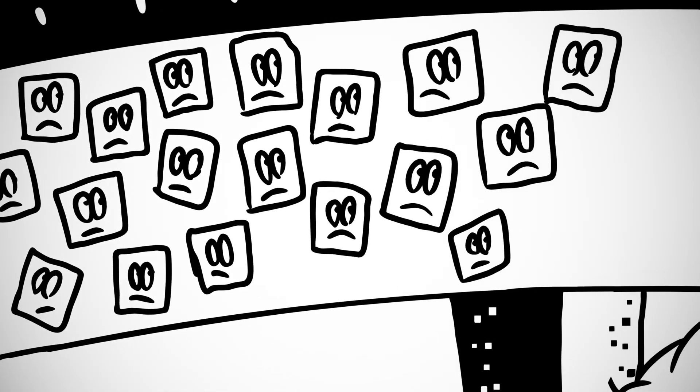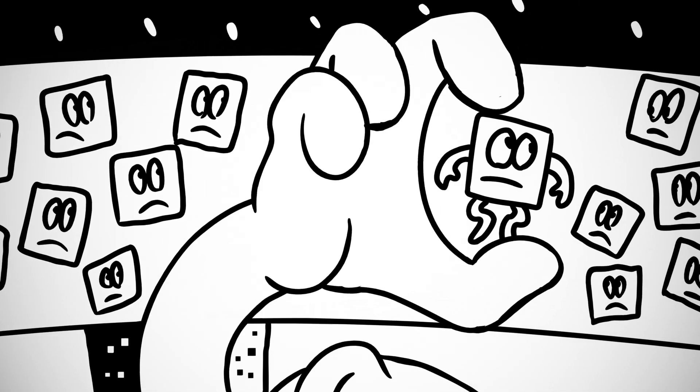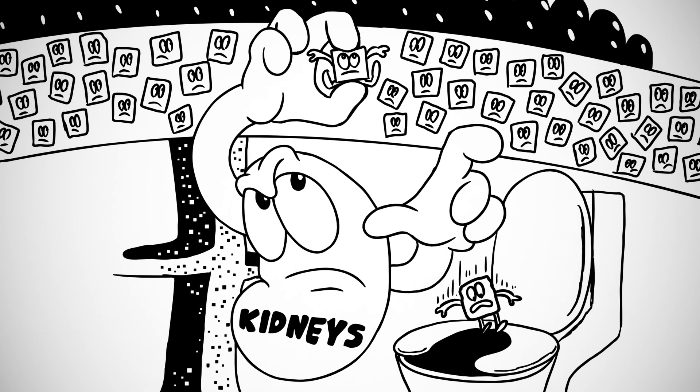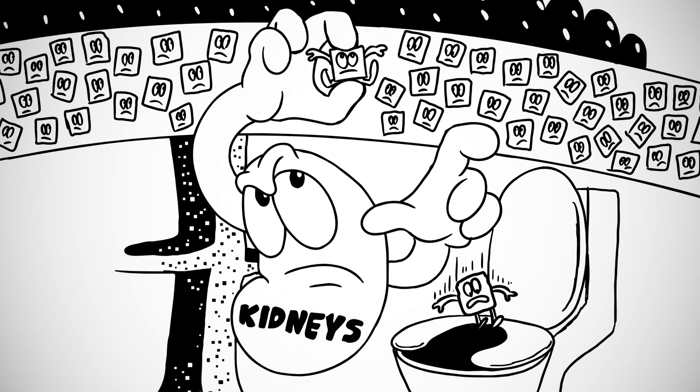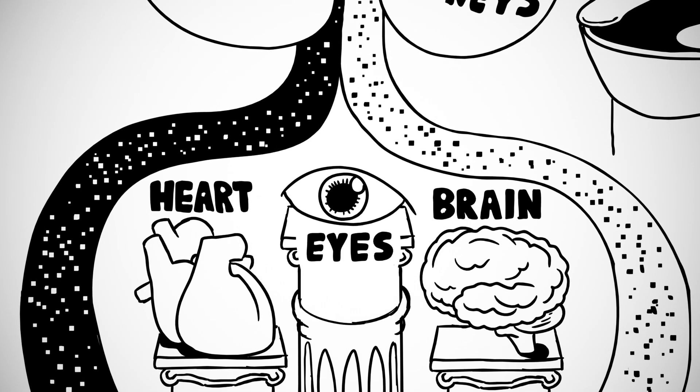In both types of diabetes, because not all the glucose can get into the cells, it builds up in the blood. The kidneys, which filter the blood, try to get rid of the excess glucose in the urine. This results in excessive urination and consequently excessive thirst. However, glucose continues to build up in the blood.